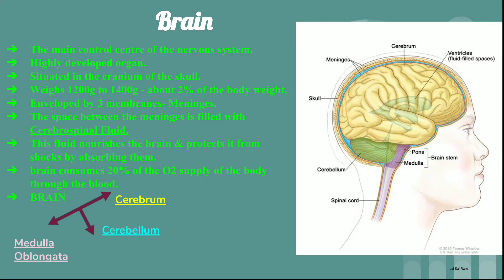Now we come to the central nervous system — the brain. This is the main control center of the nervous system. It is a highly developed organ present in our body, and therefore it is situated in the brain box, brain cage, or what is called the skull — the cranium of the skull. This brain weighs about 1200 to 1400 grams and constitutes about 2% of the body weight. This brain is enveloped and covered by three layers called three membranes.